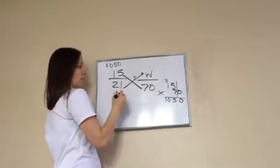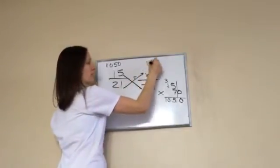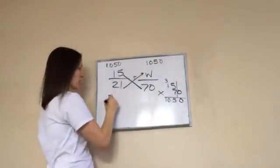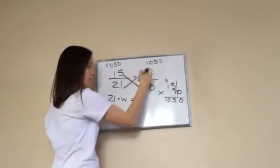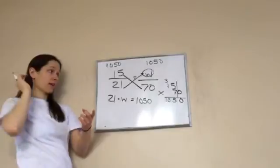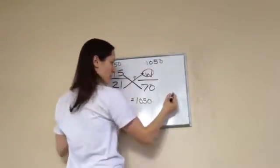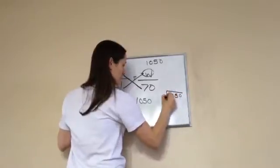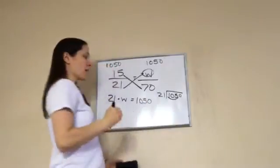1050 divided by. Oh, that's to equal 1050. Okay, so how am I going to answer that? 21 times this, W, which we don't know, equals 1050. Is that right? And how am I going to answer that? I have to divide. Okay. So I'm going to take away this problem since my board is small. 1050 divided by 21. And I don't have a clue. So we're just going to really have to guess.